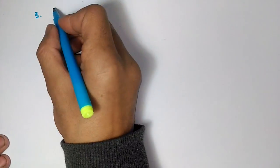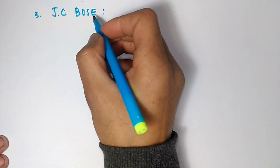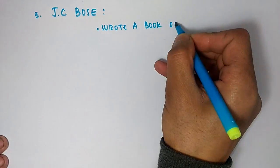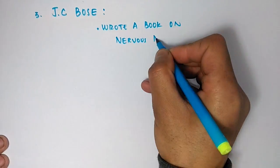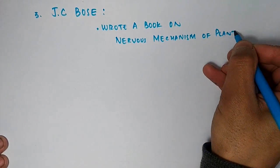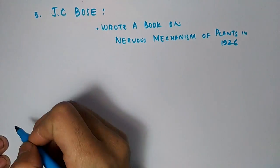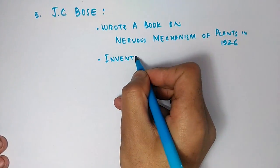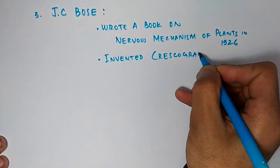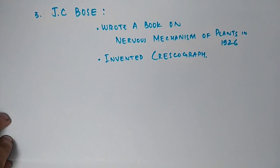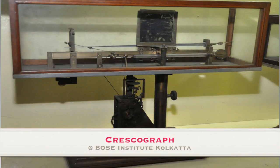In 1926, J.C. Bose wrote a book on nervous mechanism of plants. He was a strong believer that plants feel. He invented a crescograph, which is an instrument used to measure the growth of plants at a minute level. You can see in this picture, this is the crescograph invented by J.C. Bose.